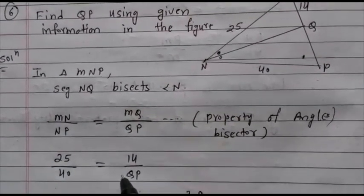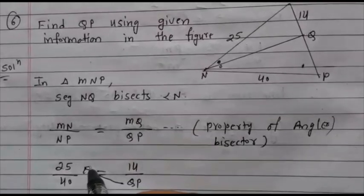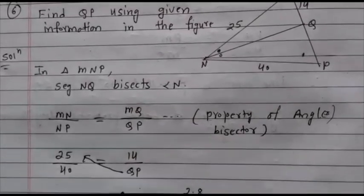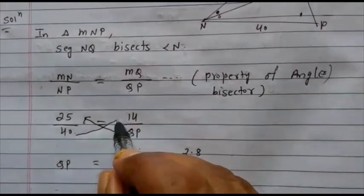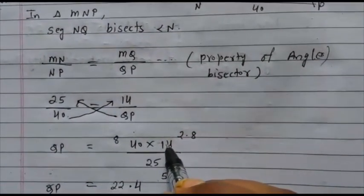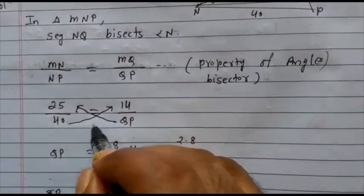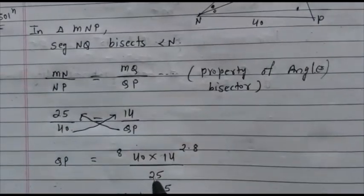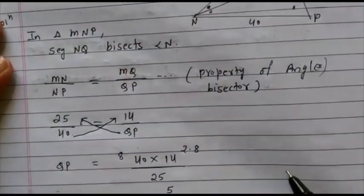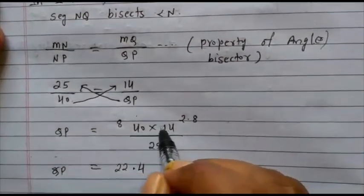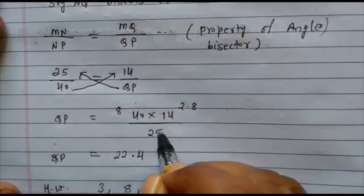You write QP goes there. So, write QP is equal to 40 multiplied with 14. That means 40 multiplied by 14 and 25 come down. So, what we got in the numerator? 40 into 14 upon 25.